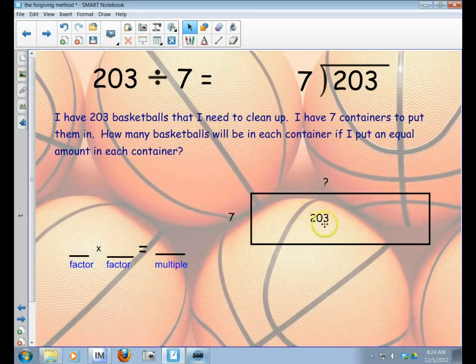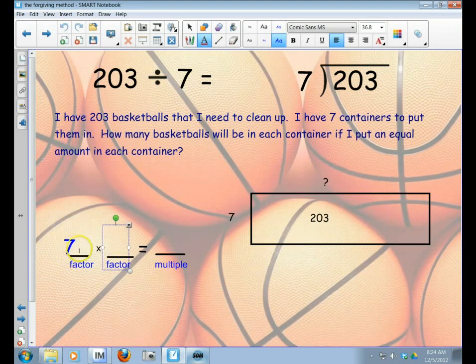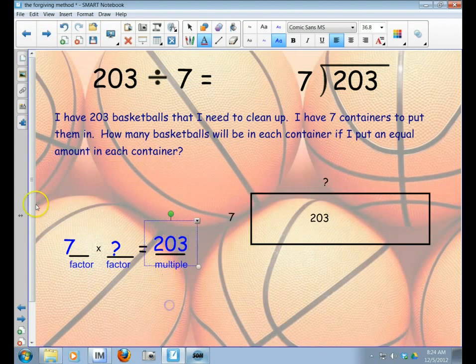So I've got 203 divided by 7. I have my array here to show this is 203, the total number of basketballs. I know one dimension is 7. I don't know what the other one is. Since multiplication and division are inverse operations, I always like to think about how I can make this a multiplication sentence. So seven times something I don't know what it is yet is going to equal 203.